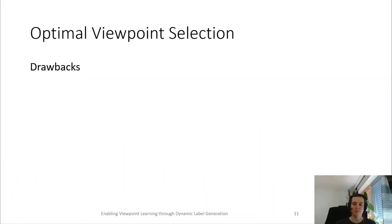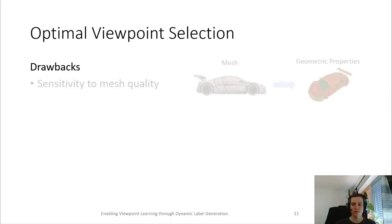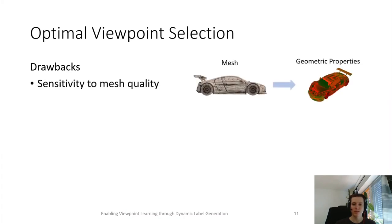However, this approach has several drawbacks. First, it can be sensitive to the input mesh quality as the geometric properties are often defined on the input mesh, thus making the resulting quality value also sensitive to input mesh quality and mesh discretization.